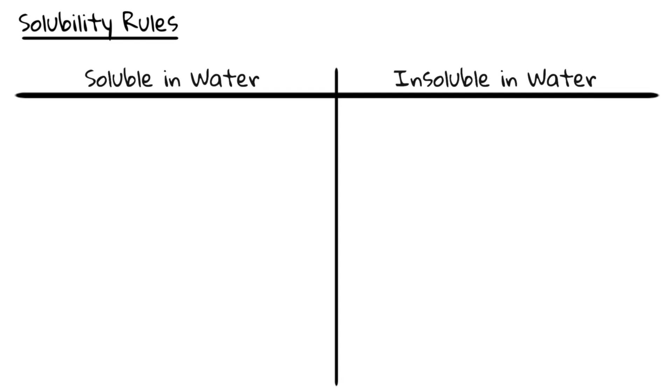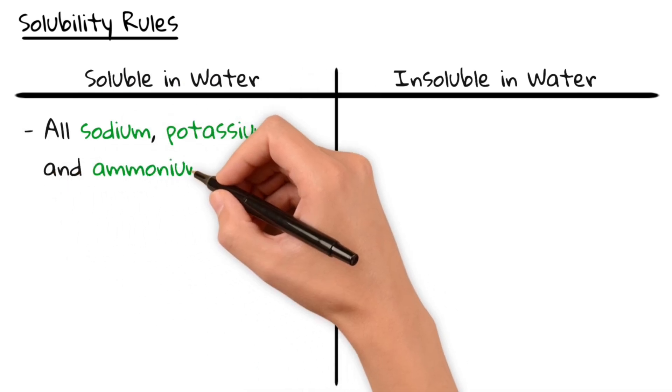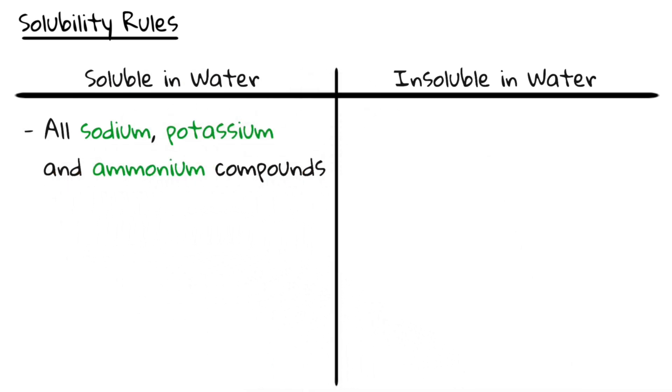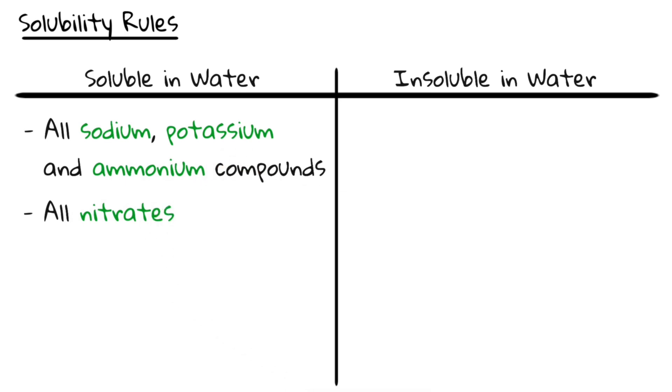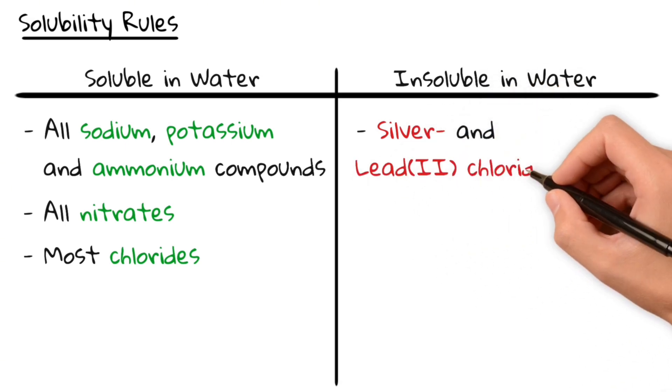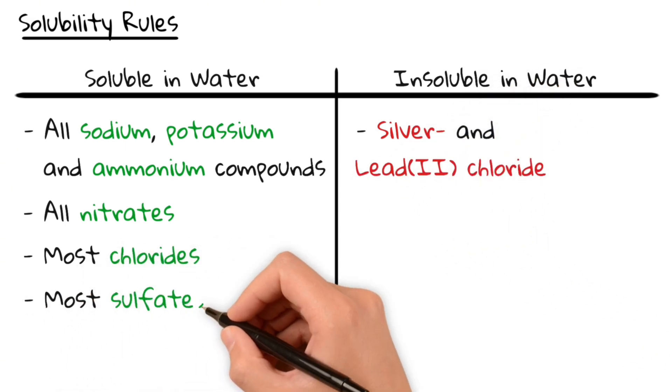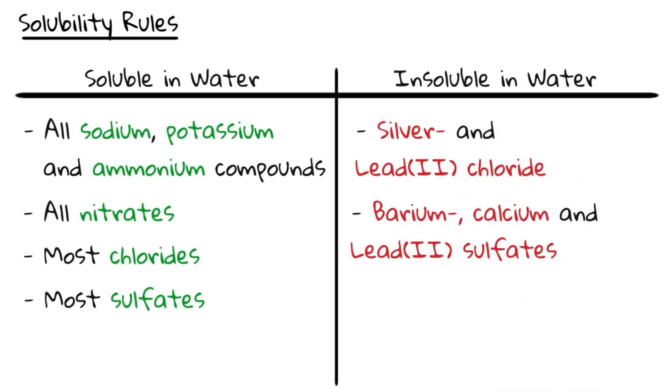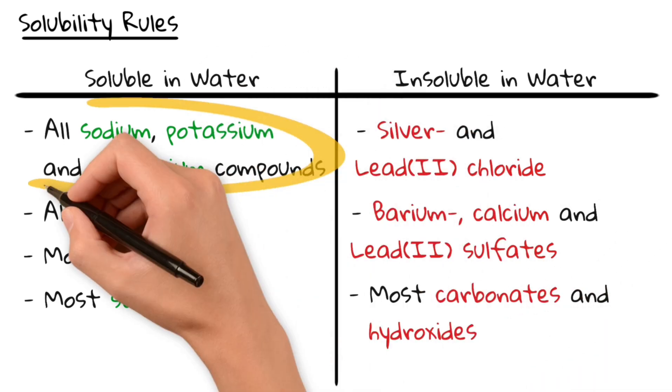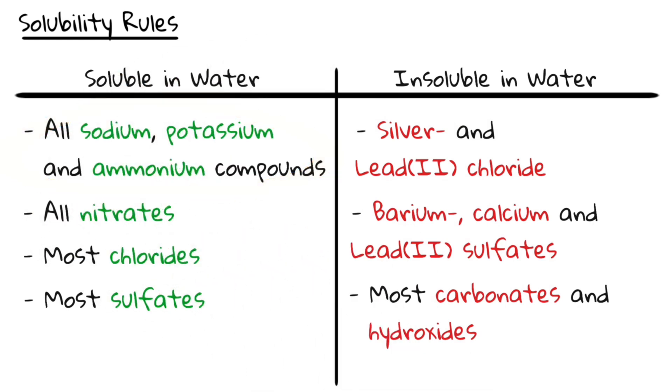Here are the must-know solubility rules for the IGCSE chemistry exam. All sodium, potassium, and ammonium compounds are soluble. All nitrates are soluble. Most chlorides are soluble except silver and lead chlorides. Most sulfates are soluble except barium, calcium, and lead sulfates. Most carbonates and hydroxides are insoluble except sodium, potassium, and ammonium ones.